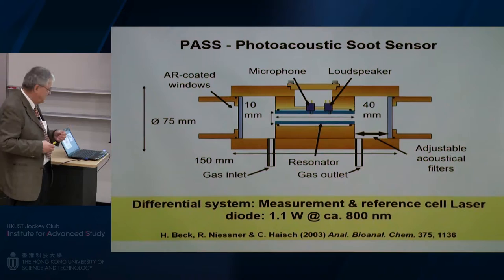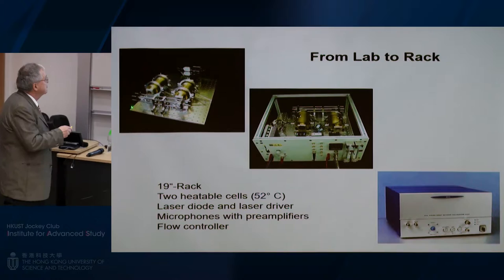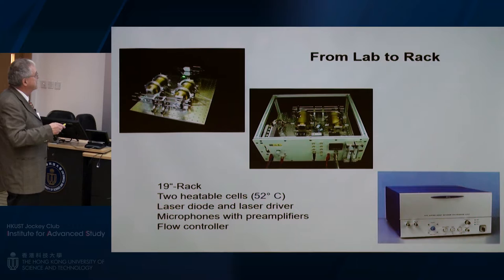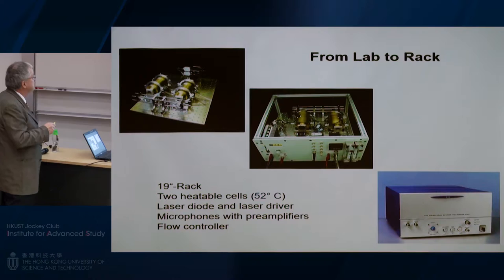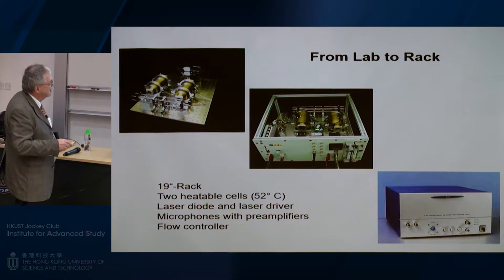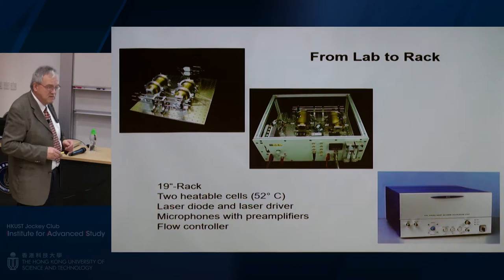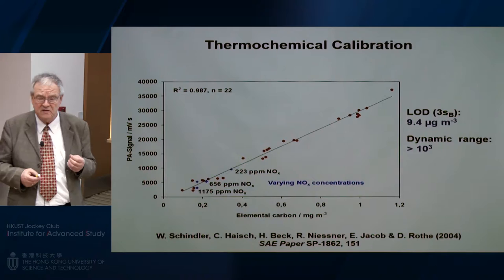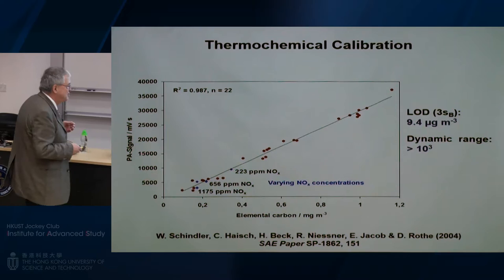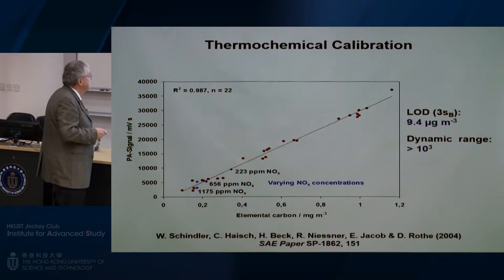This was the first working prototype, prepared in our workshop. We built differential cell equipment — one cell uses filtered aerosol to cancel any gas interference. Nowadays the instrument looks like this commercial version. So far we have sold about 1,300 units. Each unit costs about 30,000 euro — around 300,000 Hong Kong dollars. As an analyst, you can always make money with these developments.